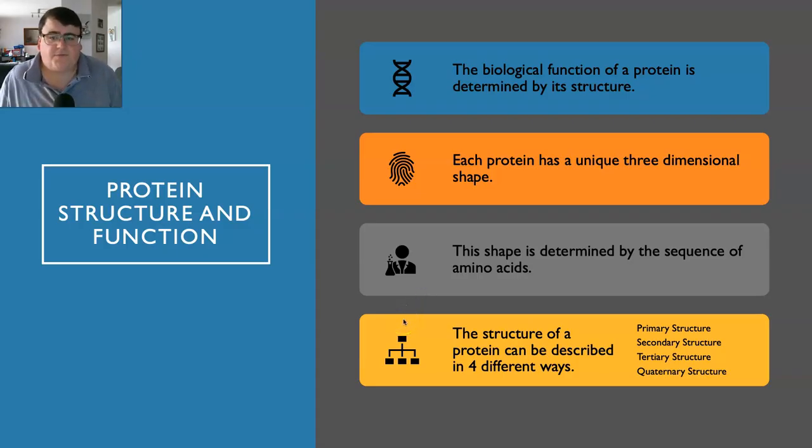Protein structure and function. As we talked about in the last video, the biological function of a protein is determined by its structure. How a protein acts depends on its shape because every protein has a unique 3D shape. That shape is determined by the sequence of amino acids, which is determined by the sequence of nucleotide bases. That's why transcription and translation are important. The structure of the protein can be described in four different ways: primary, secondary, tertiary, or quaternary.